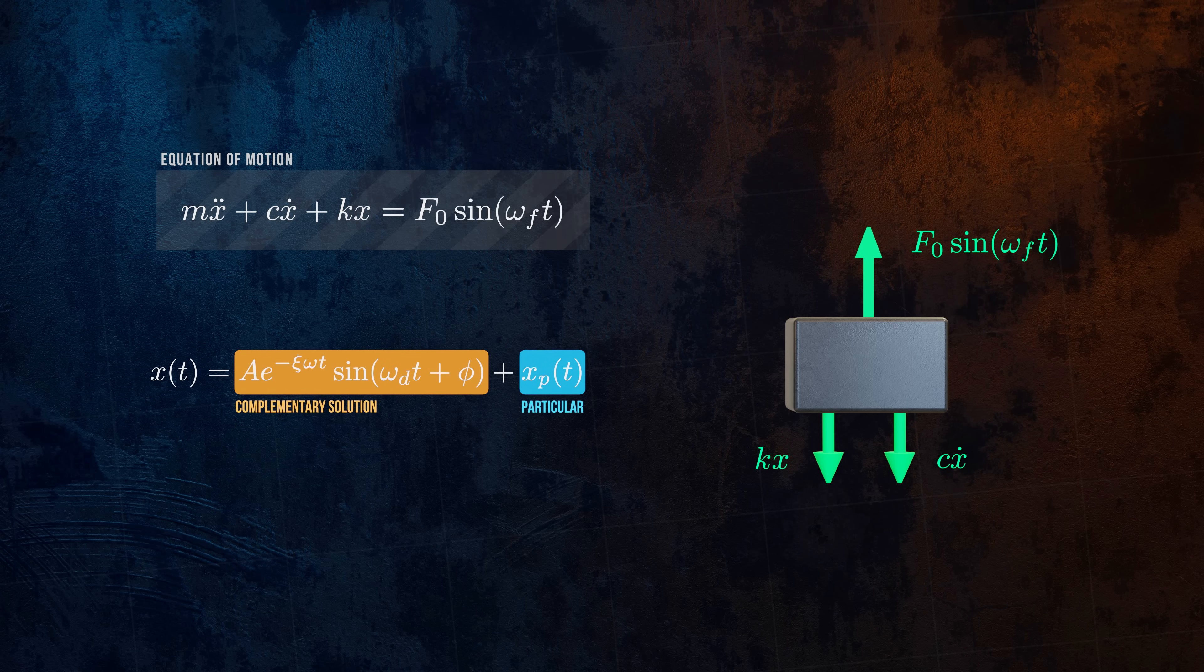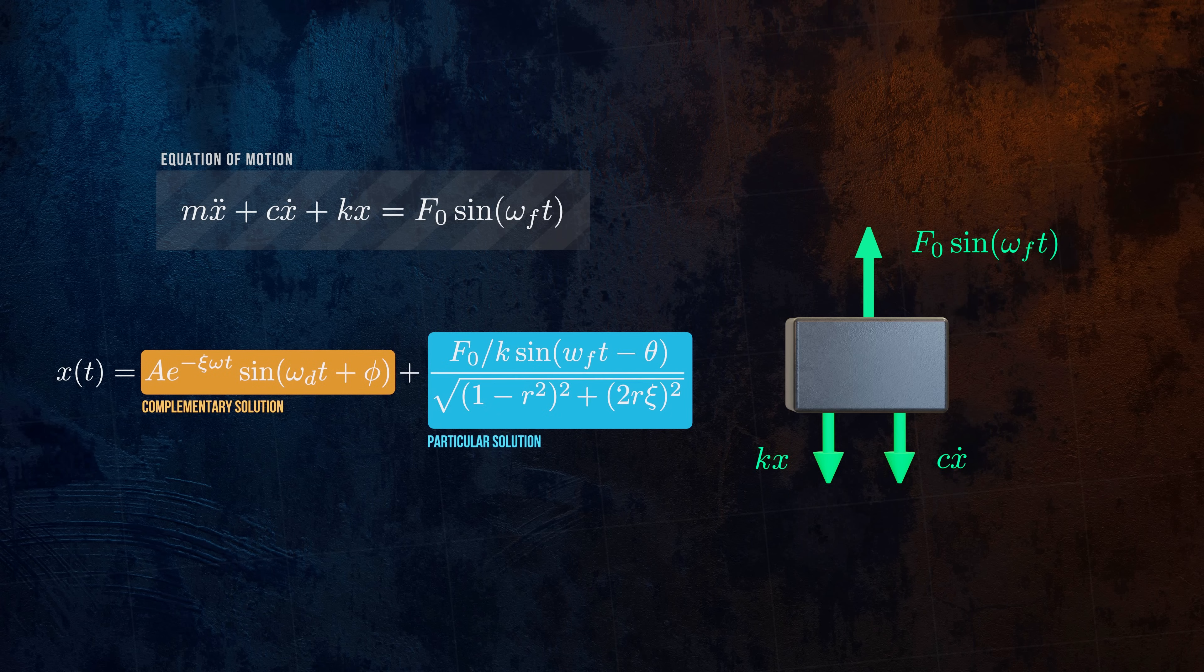And the particular solution captures the effect of the external loads and is given by this expression. R is the ratio of the frequency of the external force to the natural frequency of the model.